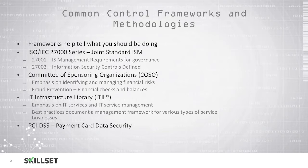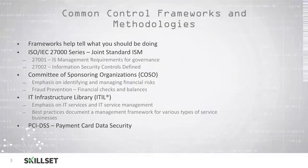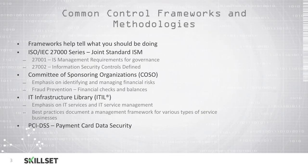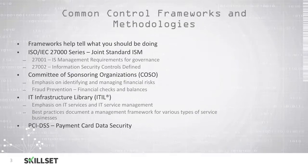There are several common frameworks that will help you develop your security policy. The International Organization for Standardization, or ISO, and the International Electro-Technical Commission, or IEC, have come up with a joint standard for information security management, known as the 27,000 series. 27,001 is an information security management requirements standard to provide governance, and 27,002 defines security controls that can be used to achieve your mission. You should remember the difference between these two standards for the CISSP examination, noting that 27,001 provides information about governance and 27,002 defines security controls.